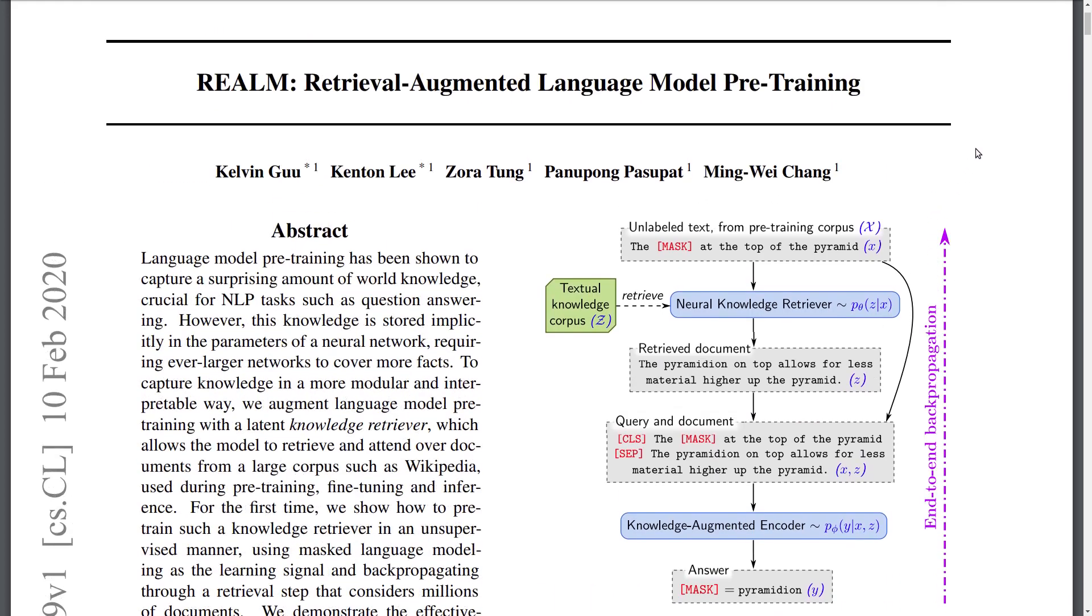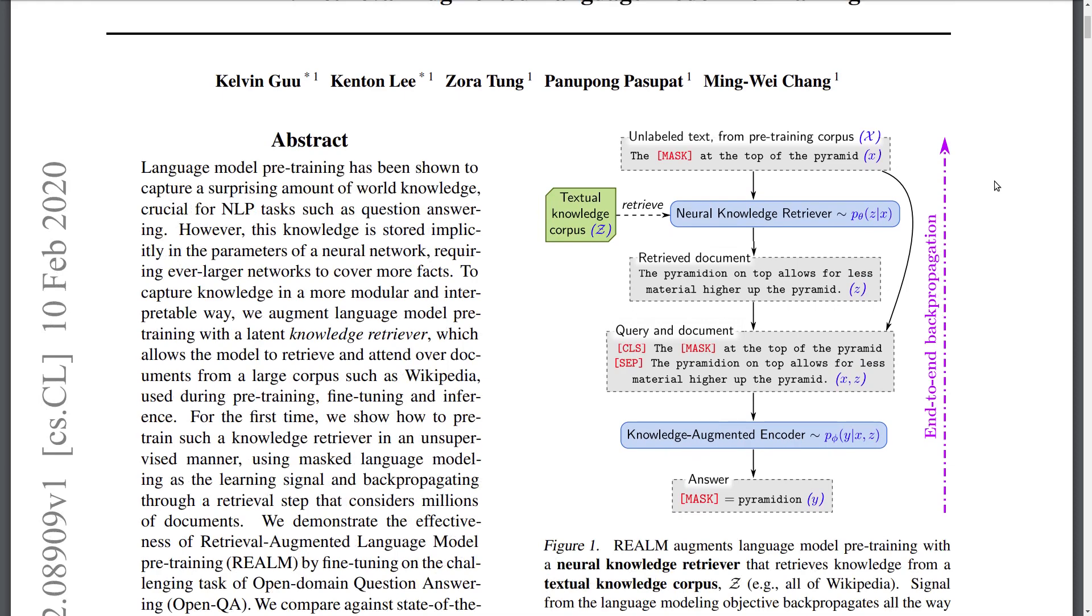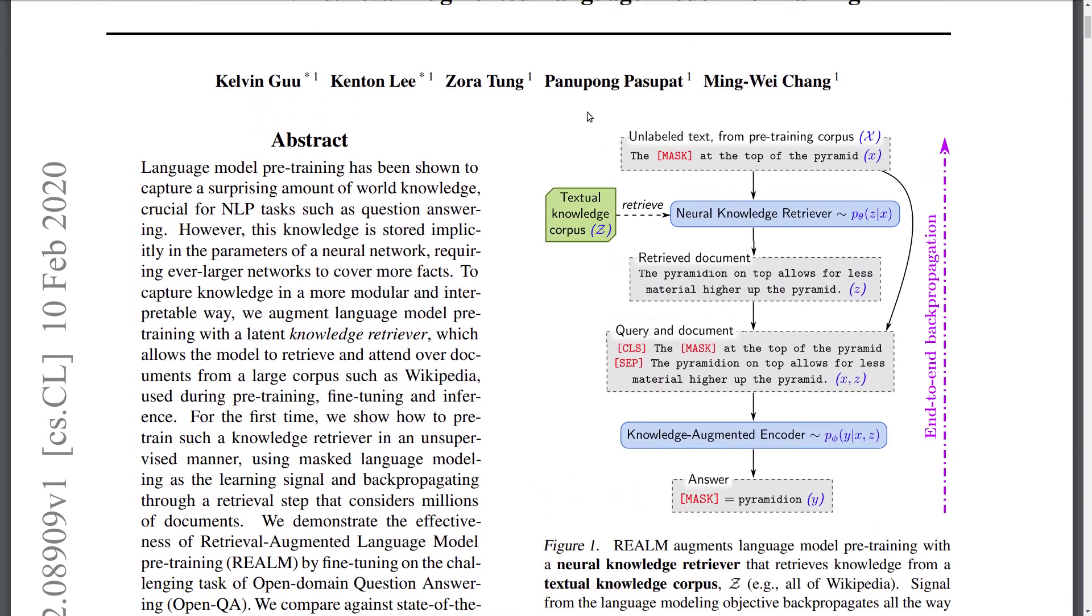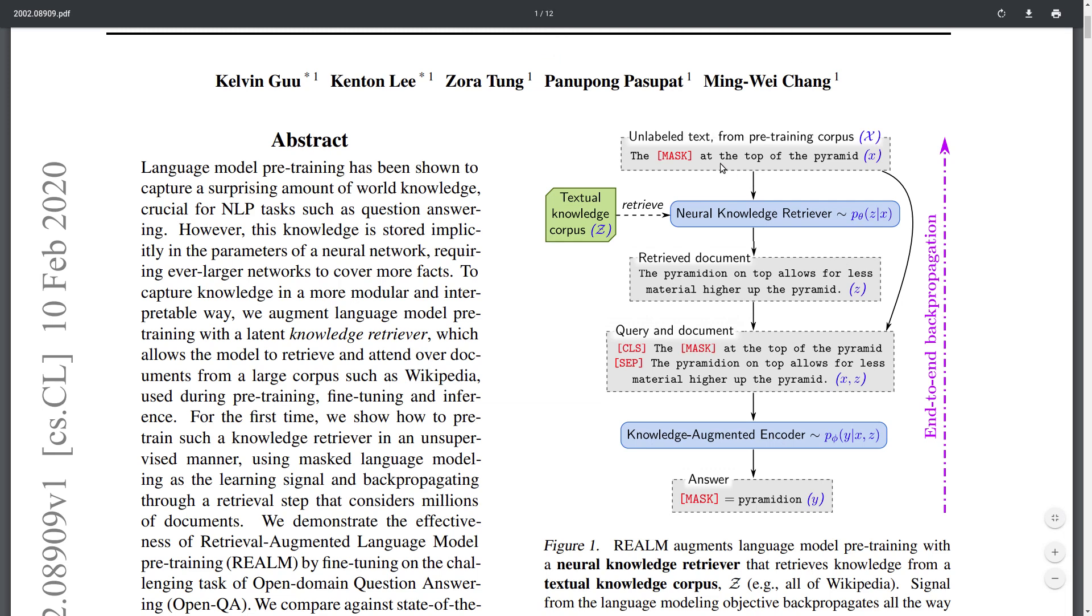This paper is about masked language modeling, which has been very popular in recent years in NLP. The standard BERT language model is trained to predict masked tokens. Given a sentence like 'the mask at the top of the pyramid,' it tries to replace the mask token with the correct prediction, which is 'pyramidion' here—the pyramidion at the top of the pyramid.